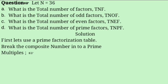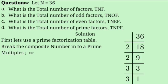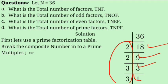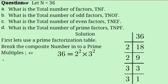We need to break the composite number 36 into prime multiples. Dividing 36 by 2 gives 18, 18 by 2 gives 9, 9 by 3 gives 3, and 3 by 3 gives 1. So 36 equals 2 raised to 2 times 3 raised to 2.